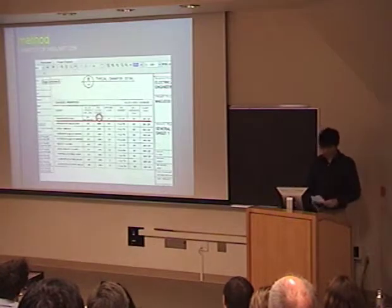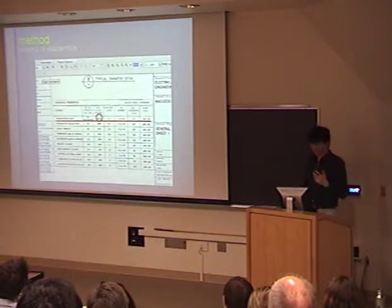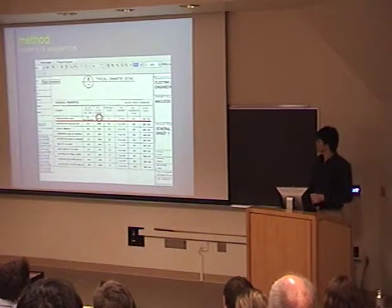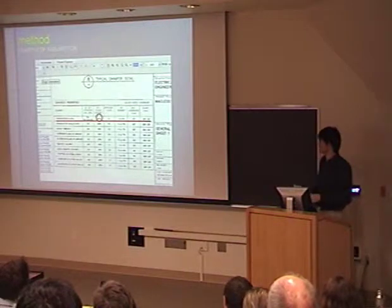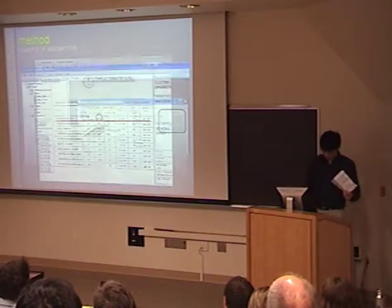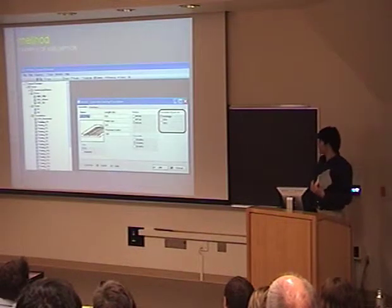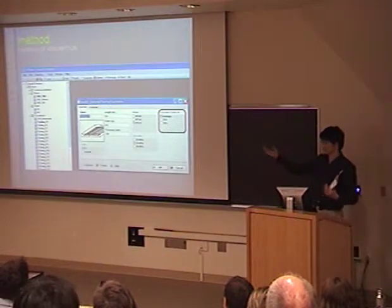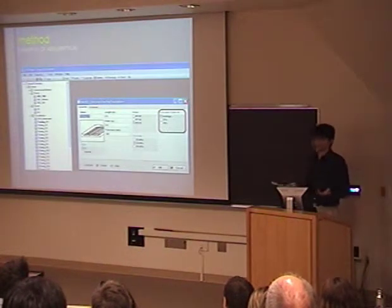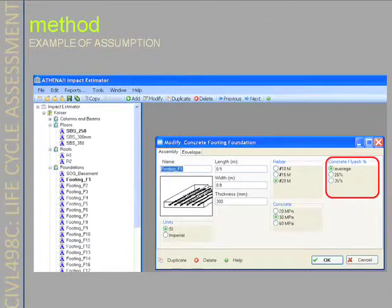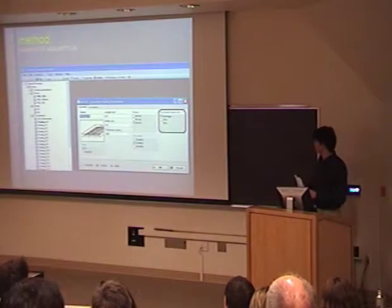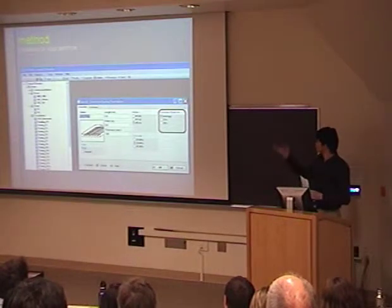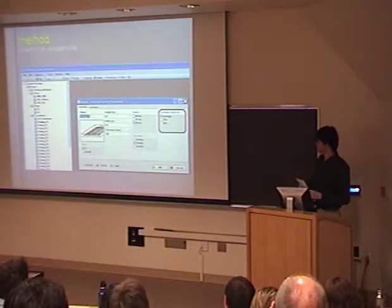Here is an example of an impact estimator assumption. The fly ash content in the specification is 50%. However, in the impact estimator, fly ash averages are assumed to be 9%, 25%, and 35%. In this case, we assumed the average value.